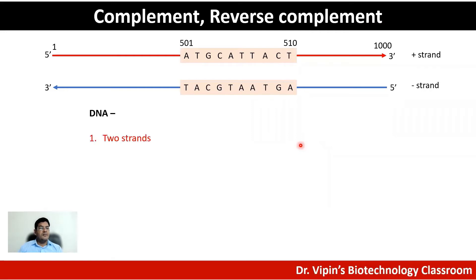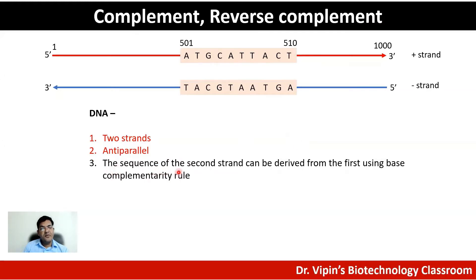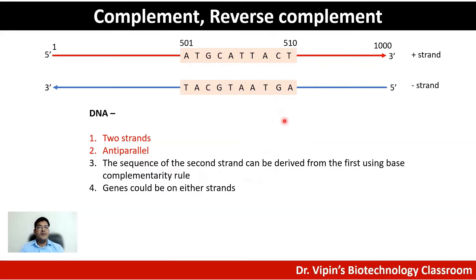Key points: DNA is double-stranded; the two strands are anti-parallel to each other; the sequence of the second strand can be derived from the first strand using the base complementarity rule — A pairing with T and G pairing with C. Importantly, genes could be present on either the plus strand or the minus strand. When present on the top strand, you directly retrieve the sequence. When present on the minus strand, you must complement and read from the opposite end.